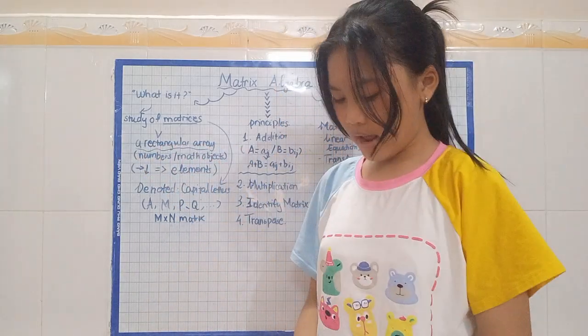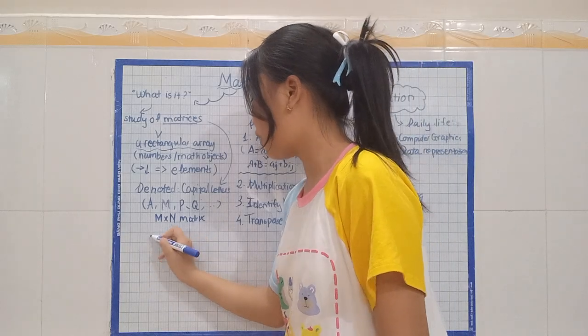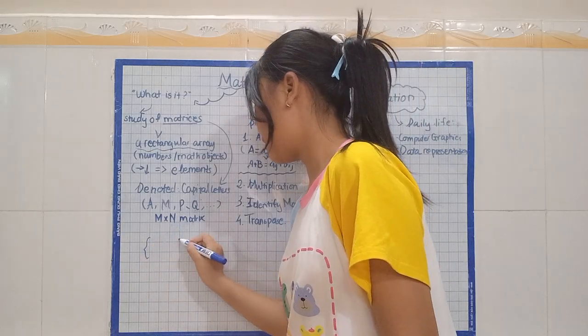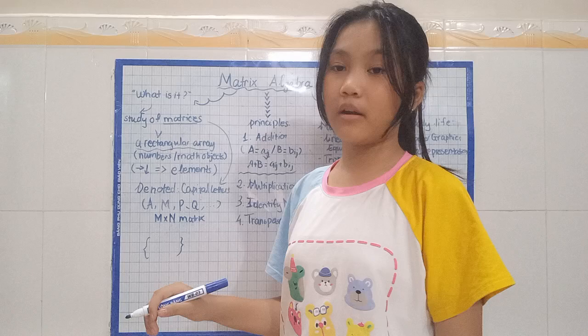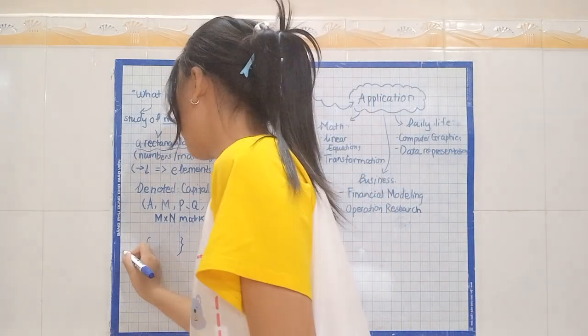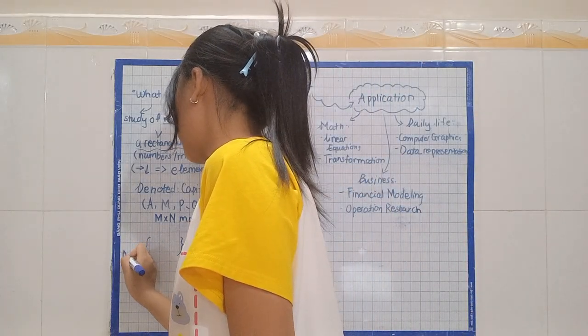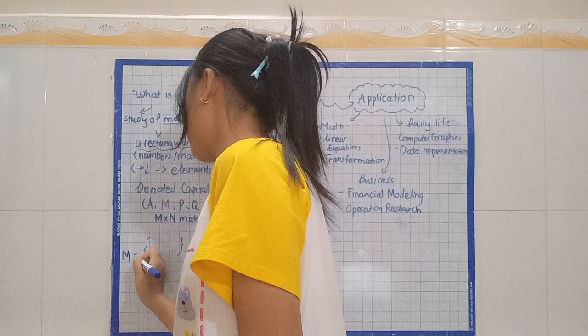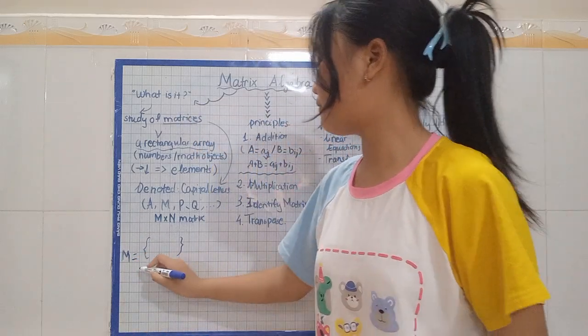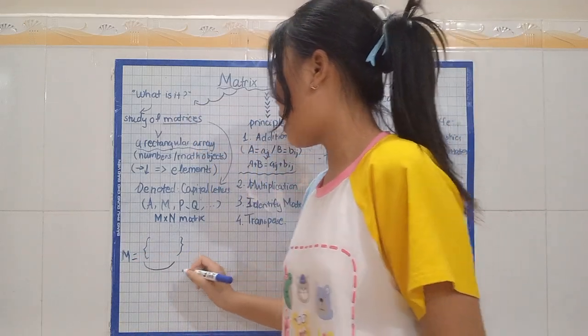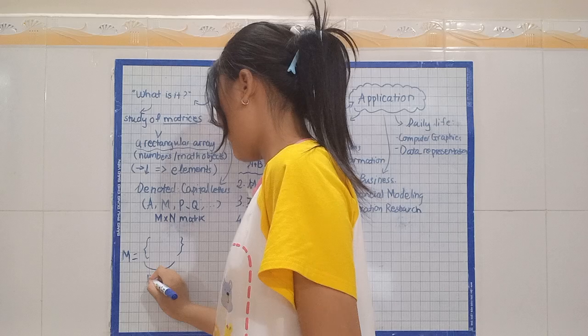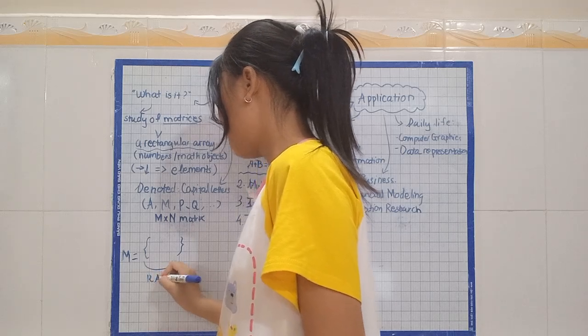It usually is shown in a rectangular array. The rectangular array is shown like something like this. If we are given matrix M, we will represent it like this. Matrix M equals to, and then we have these rectangular arrays. I'm going to write them as RA.